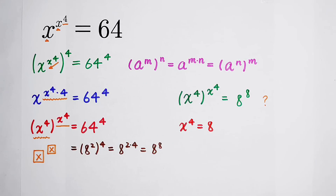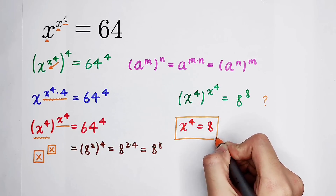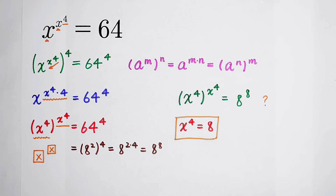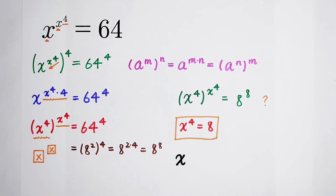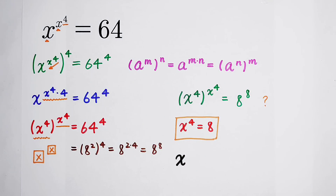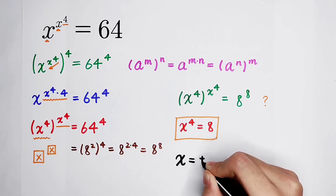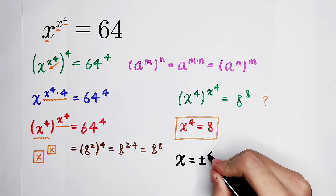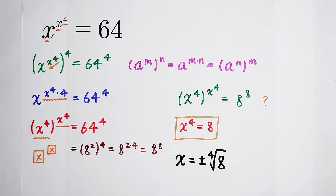Now, how should we solve this equation x to the power of 4 equals 8? It is easy! Since 4 is even, this equation has two real roots: x is equal to positive or negative the fourth root of 8.